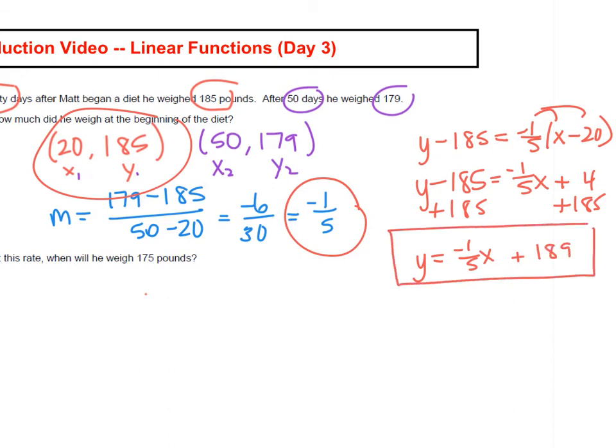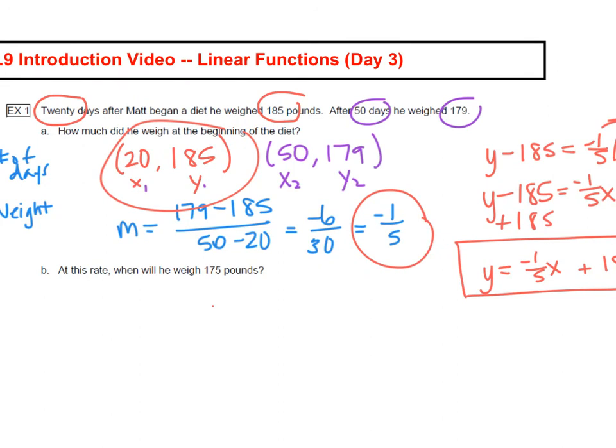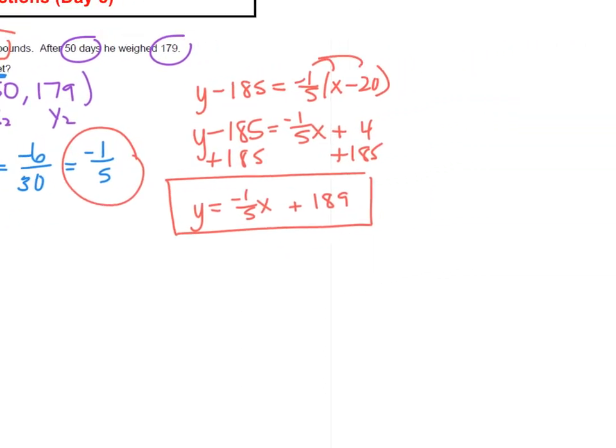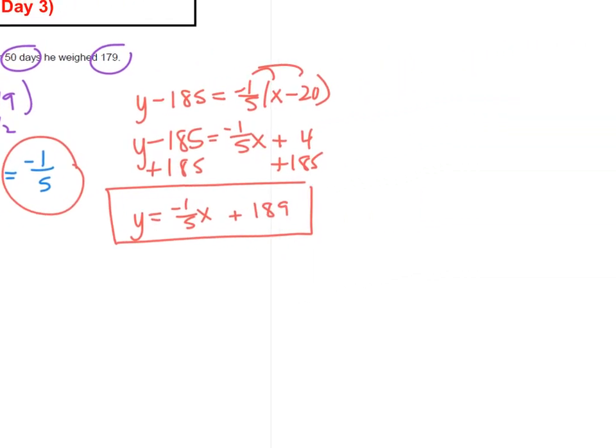Alright, now that we have the equation to model the situation, let's see what the question asks. So how much did he weigh at the beginning of the diet? That's the Y. We want to figure out the Y. At the beginning of the diet, how many days have gone by? That would be 0 days. So we're going to let X equals 0. So Y equals negative 1 fifth times 0 plus 189. That cancels, leaving us with Y equals 189. And that is the answer to the question. He weighed 189 pounds at the start of the diet.